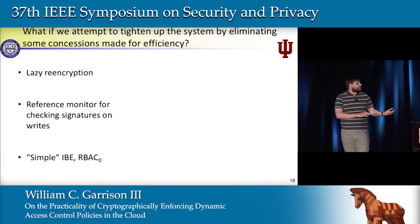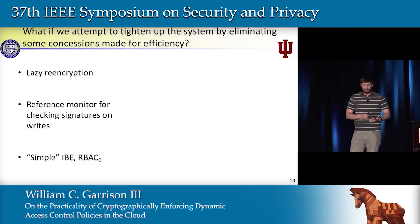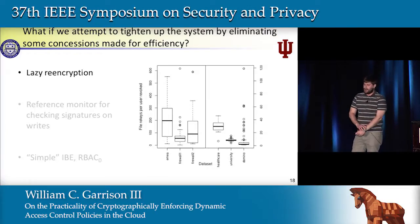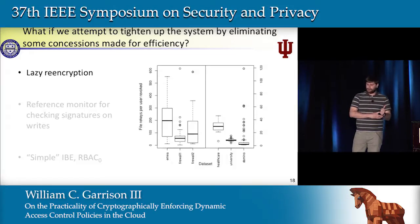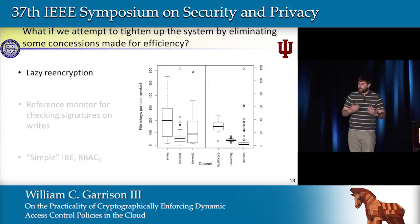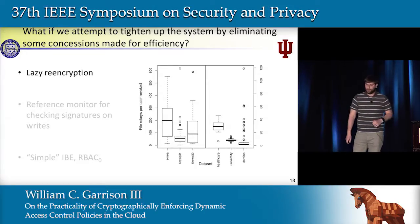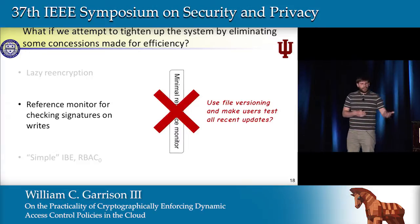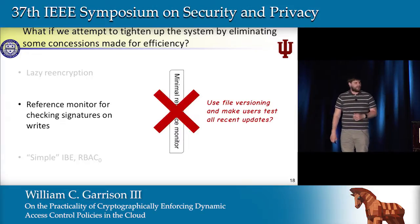Well, what if we wanted to tighten up the system and eliminate some of those efficiency optimizations? We could get rid of lazy encryption by making the administrator re-encrypt the files at the time of revocation, but this is going to mean tens or hundreds of files needing to be re-encrypted on the spot, further delaying the state change from taking effect.